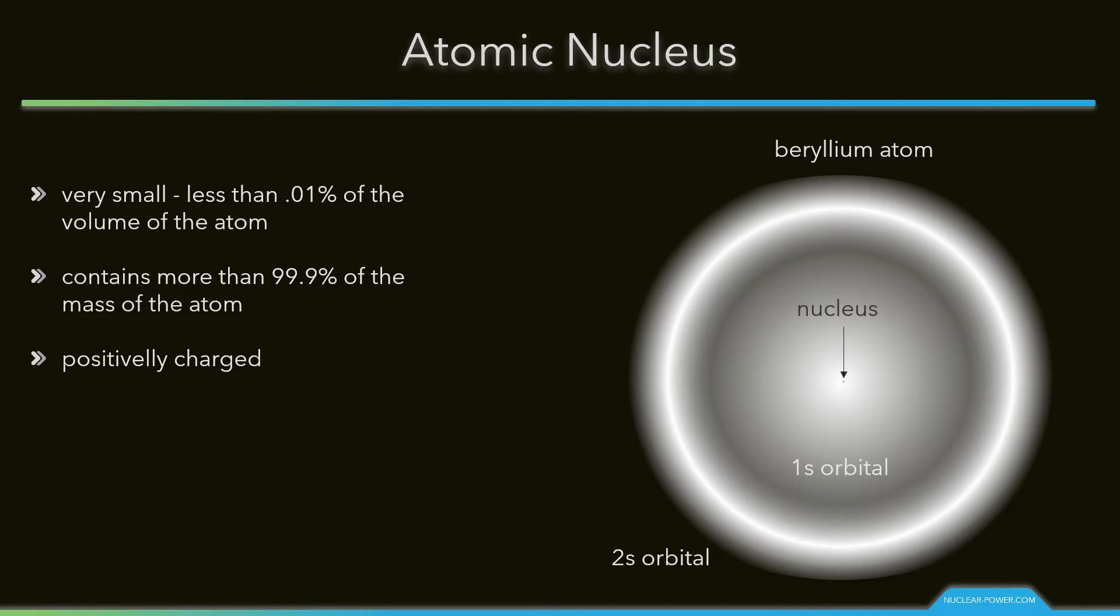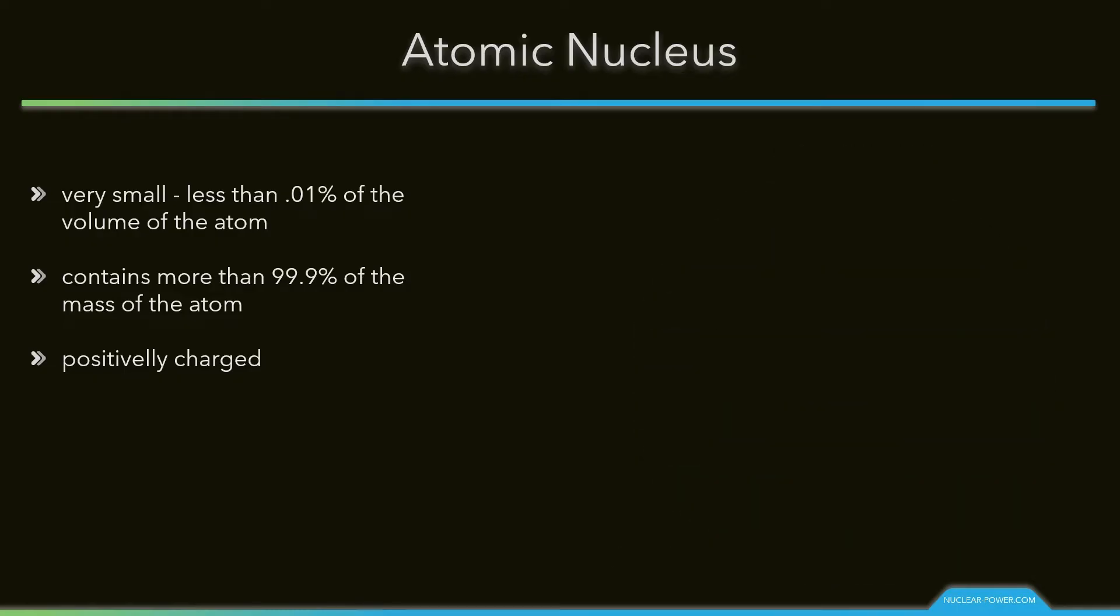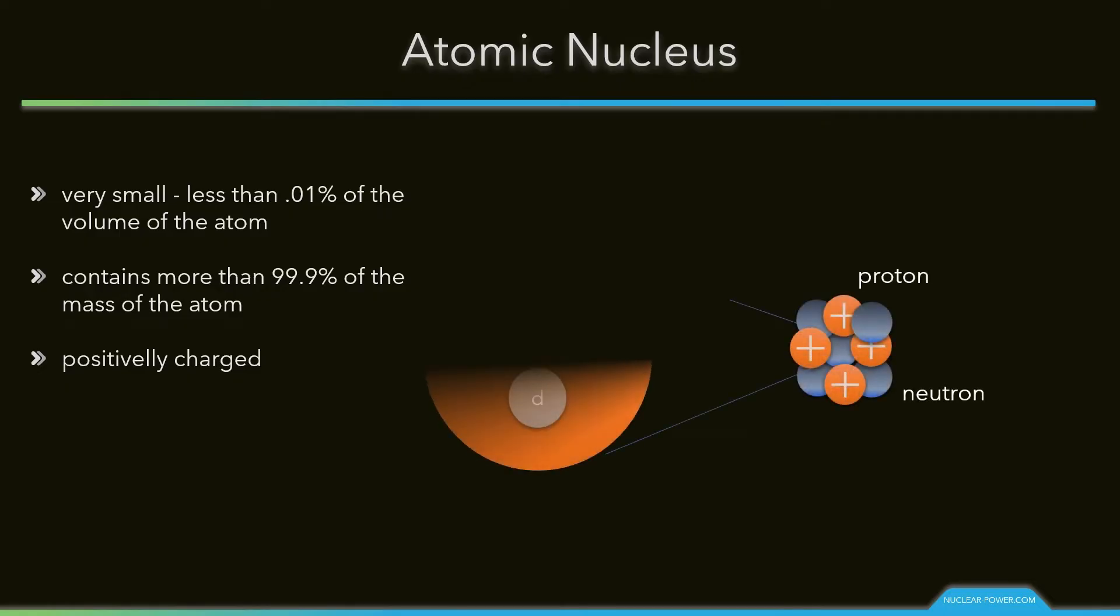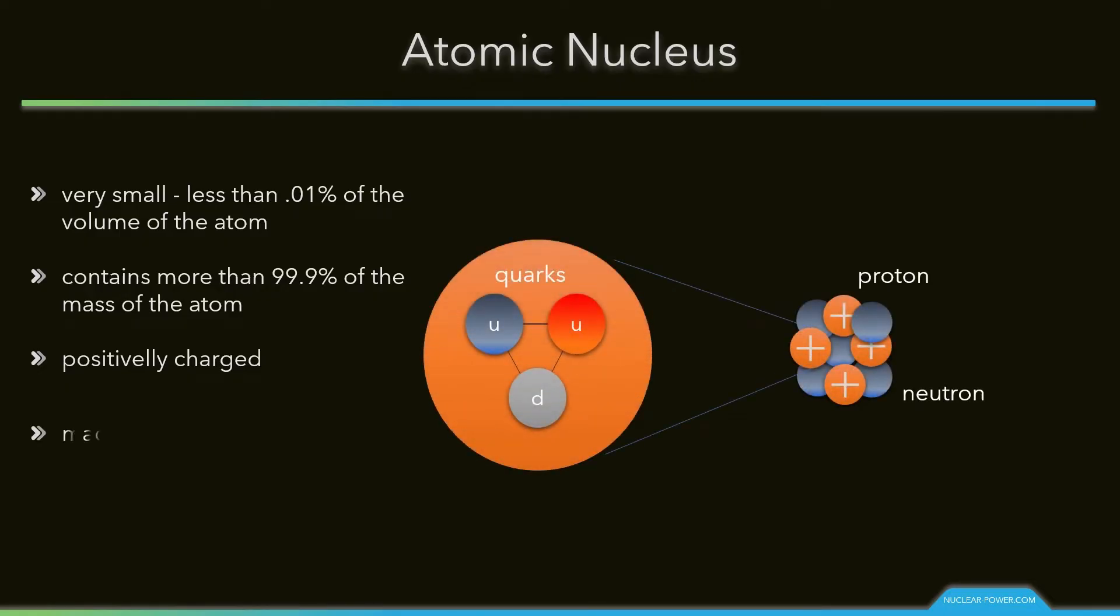The nucleus itself is generally made of protons and neutrons, but even these are composite objects. Inside the protons and neutrons, we find the quarks.